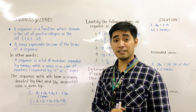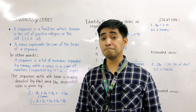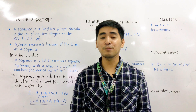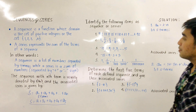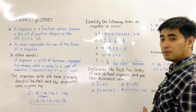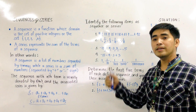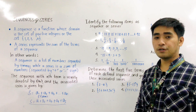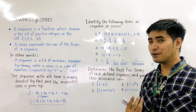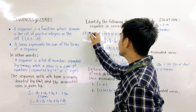Let's have an activity. Let us identify if the given set is a sequence or a series. For the first one: 9 + 12 + 15 + 18 + 21 + 45. This set is separated by plus or minus. Therefore, we call this a series.